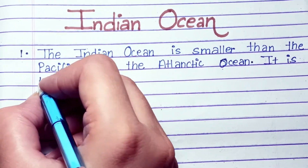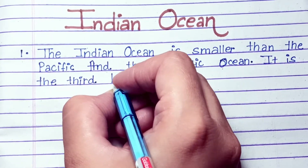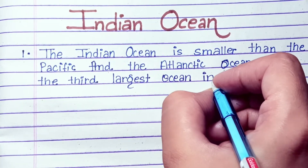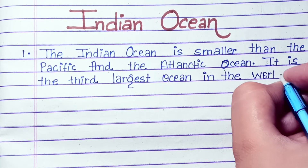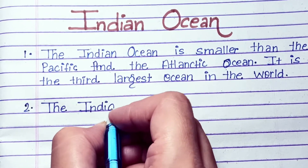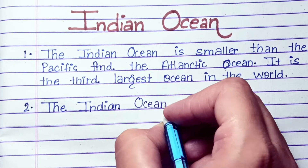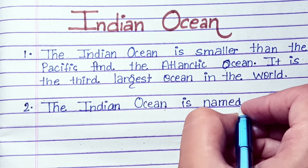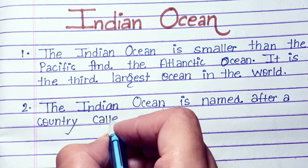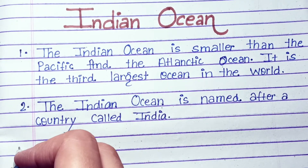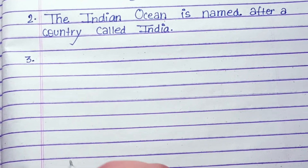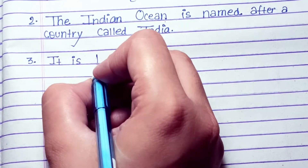Indian Ocean: the Indian Ocean is smaller than the Pacific and the Atlantic Ocean. It is the third largest ocean in the world. The Indian Ocean is named after the country India.